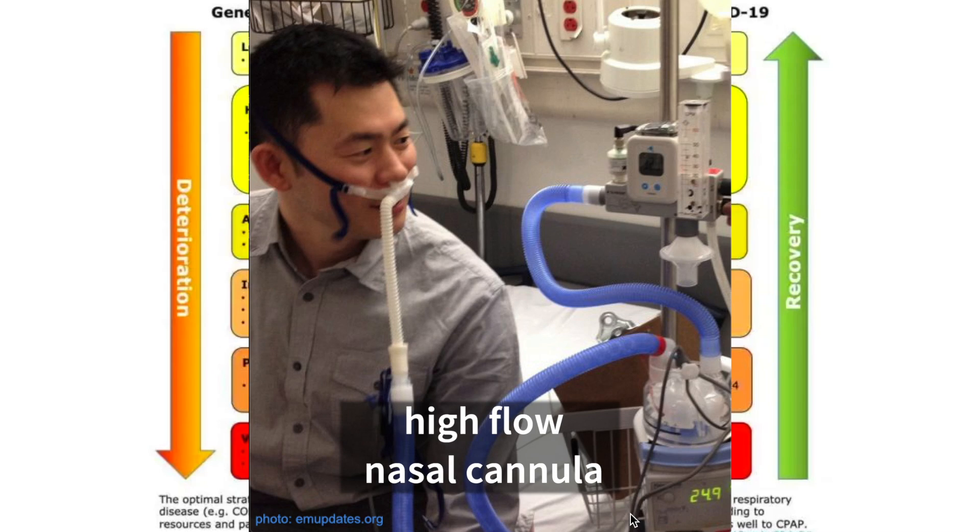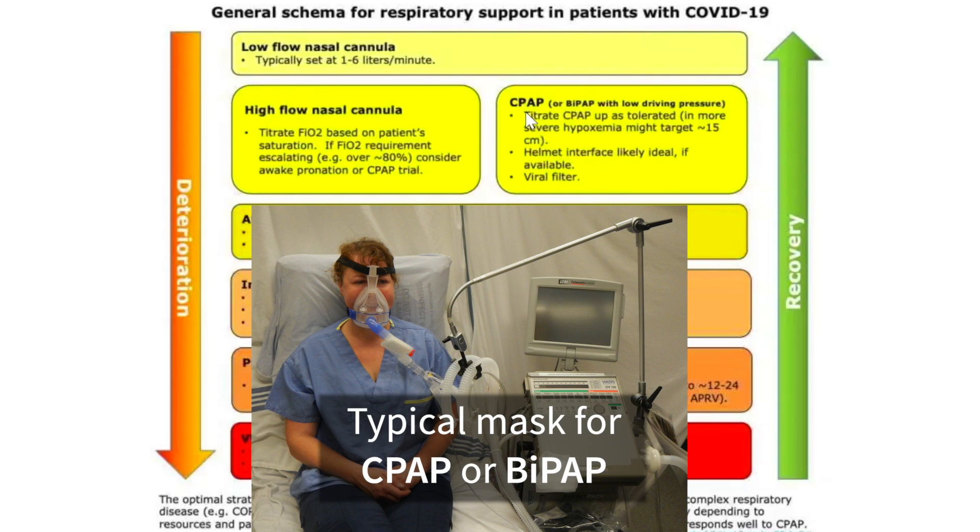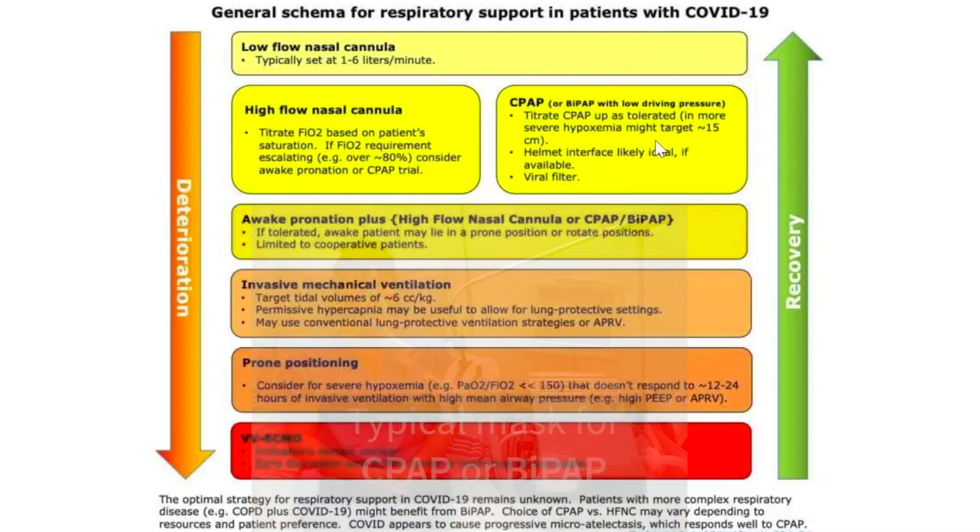If you need more than that because the oxygen keeps falling, then you can titrate the FiO2 up and go to a high flow nasal cannula. This is where you're getting maybe 20, 30, 40 liters of air being pushed into the nostrils and down into your lungs. And of course, you can adjust the FiO2 based on how much you need and titrating. Look at the SpO2 to titrate how much oxygen you need to keep the saturations greater than 90. You can also use something called CPAP, which is continuous positive airway pressure, or BiPAP, bi-level positive airway pressure with low driving pressures, and you can tolerate that as well and titrate that.